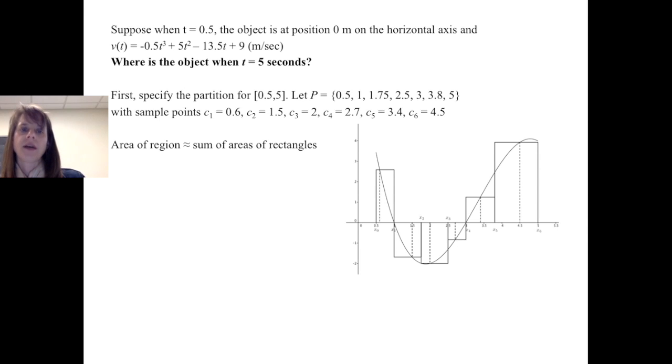Suppose that when t is at 1/2 of a second, the object is at position 0 meters on the horizontal axis. We're again given the velocity function. Where is the object when t is equal to 5 seconds?